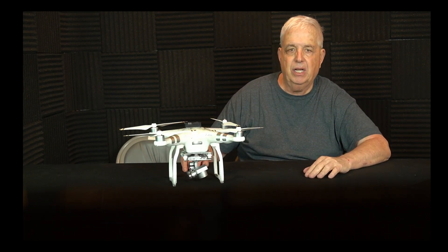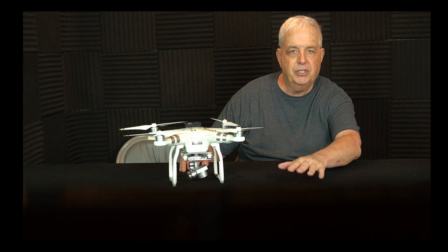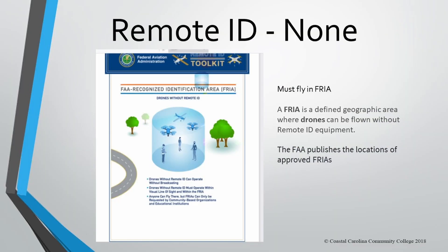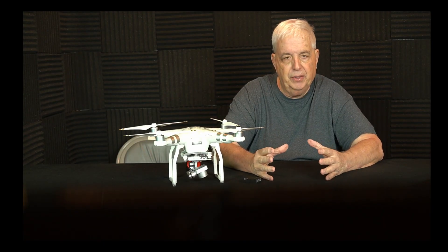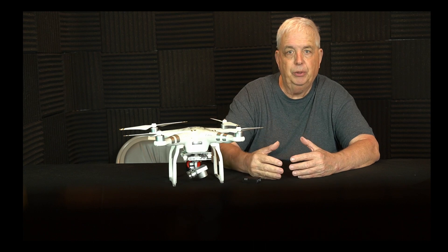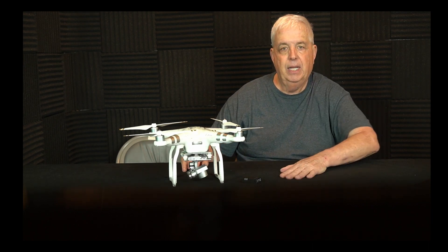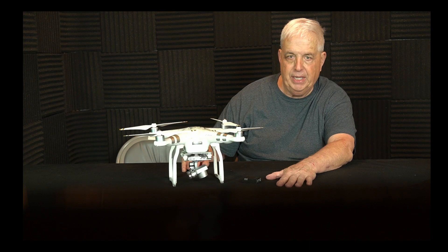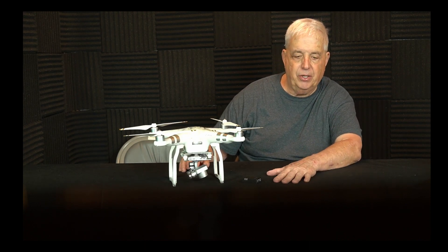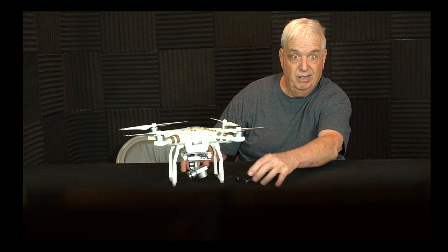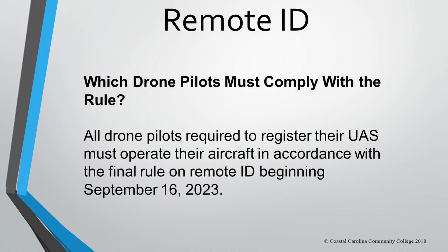These devices are acceptable substitutes for the drone itself transmitting the data. If you want to fly without a built-in or add-on module, you can fly in what's called a FRIA — a location that the FAA allows you to fly without remote ID. The FAA has to approve FRIAs, and they're usually driven by model aircraft clubs, because they also need remote ID. So what drone pilots must comply with the rule?